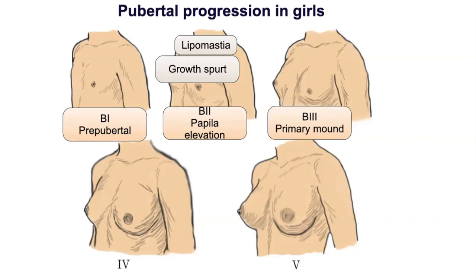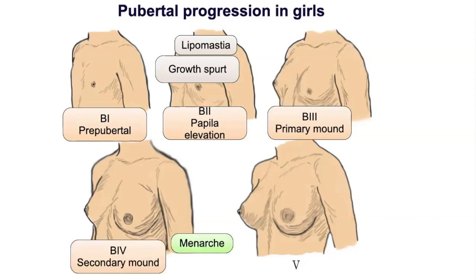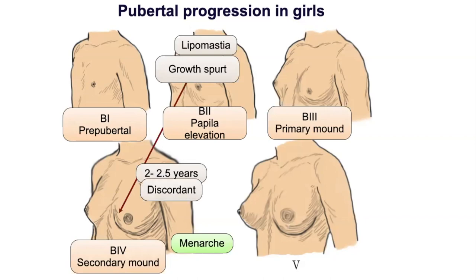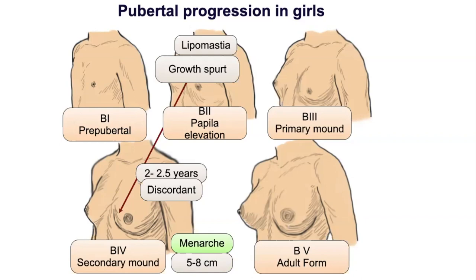Asymmetry may persist in up to 30% of adult females. The onset of the growth spurt in females is marked by breast stage 2, which lasts approximately 2 years with a growth velocity of 8 to 10 cm per year. Growth potential from breast stage 2 onwards is 20 to 25 cm, and it is 8 to 10 cm from the onset of the secondary mound. Post-menarchal growth is limited to 5 to 8 cm, highlighting the importance of considering pubertal status when determining final height in females.